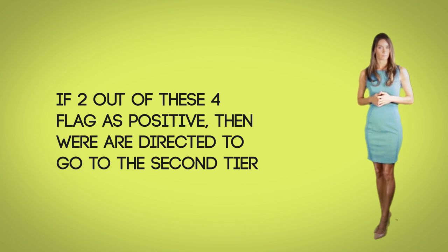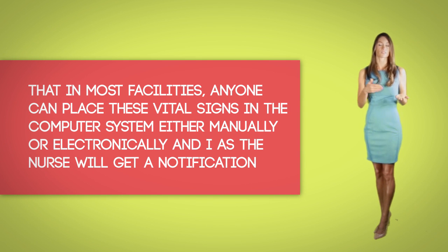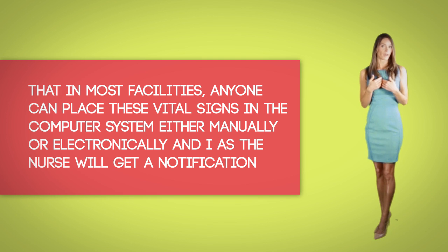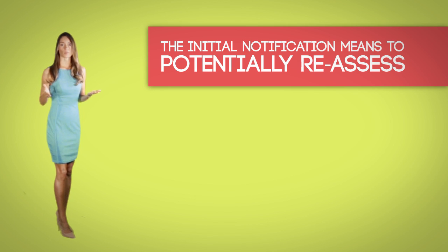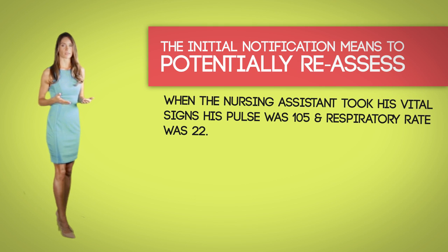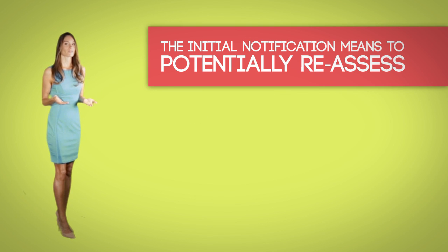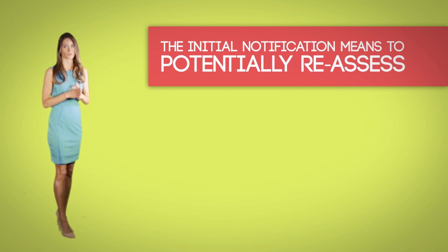If two out of these four flag positive, then we are directed to go to the second tier. Note that in most facilities, anyone can place vital signs into the system — another nurse or nursing assistant — either manually or electronically. As a nurse, I'll get a notification in the computer system, or the charge nurse will get an alert on a beeper or phone. The initial notification means to potentially reassess. For example, the other day I had a patient, a 31-year-old male who was autistic. When the nursing assistant took his vital signs, his pulse was 105 and his respirations were 22. All his other labs were normal. When I went in to assess him, he was skipping around and flapping his arms. After we convinced him to sit down and eat a snack, we rechecked his vital signs and they were within normal limits. So sometimes the initial flag simply means to reassess.